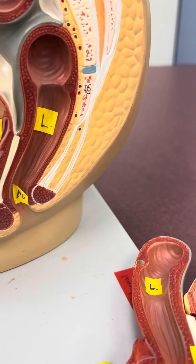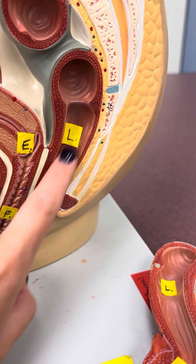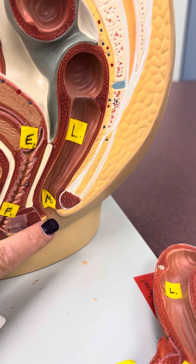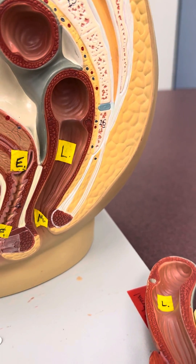L, back here in the back, is the rectum. And then M, here, is the anus.